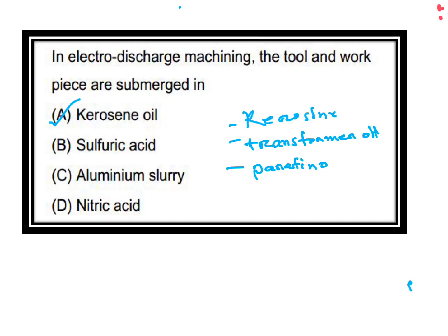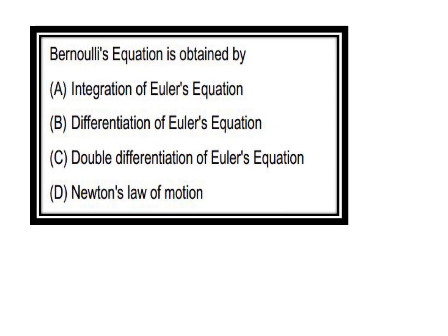Next question: Bernoulli's equation is obtained by — differentiation of Euler's equation, double differentiation of Euler's equation, Newton's law of motion, or integration of Euler's equation of motion? The answer is option A: integration of Euler's equation.